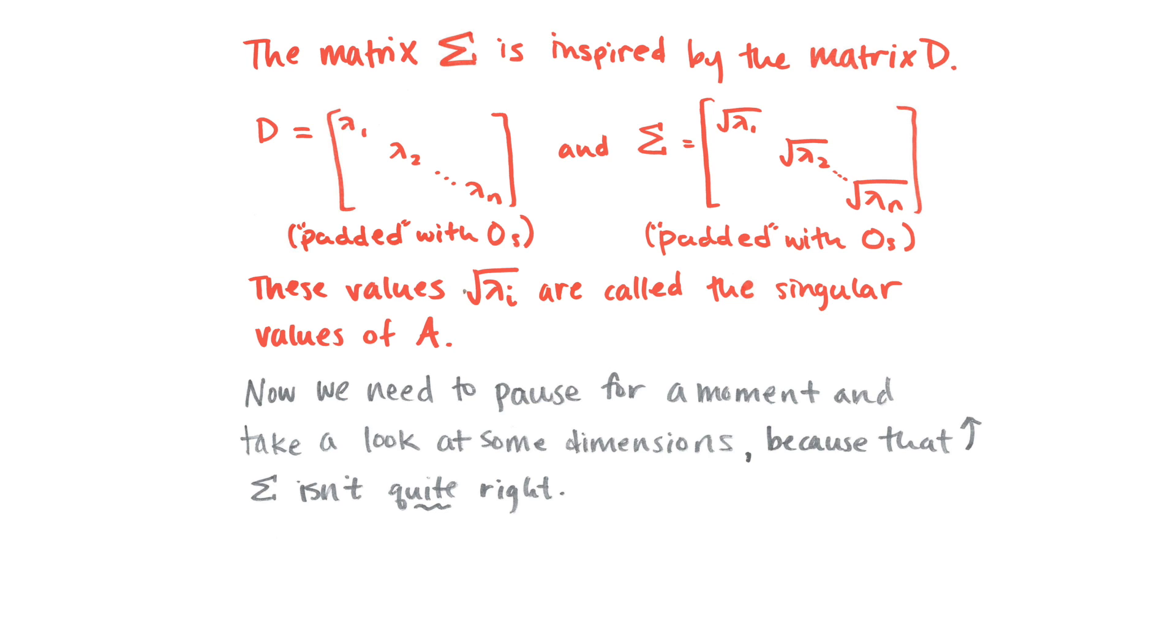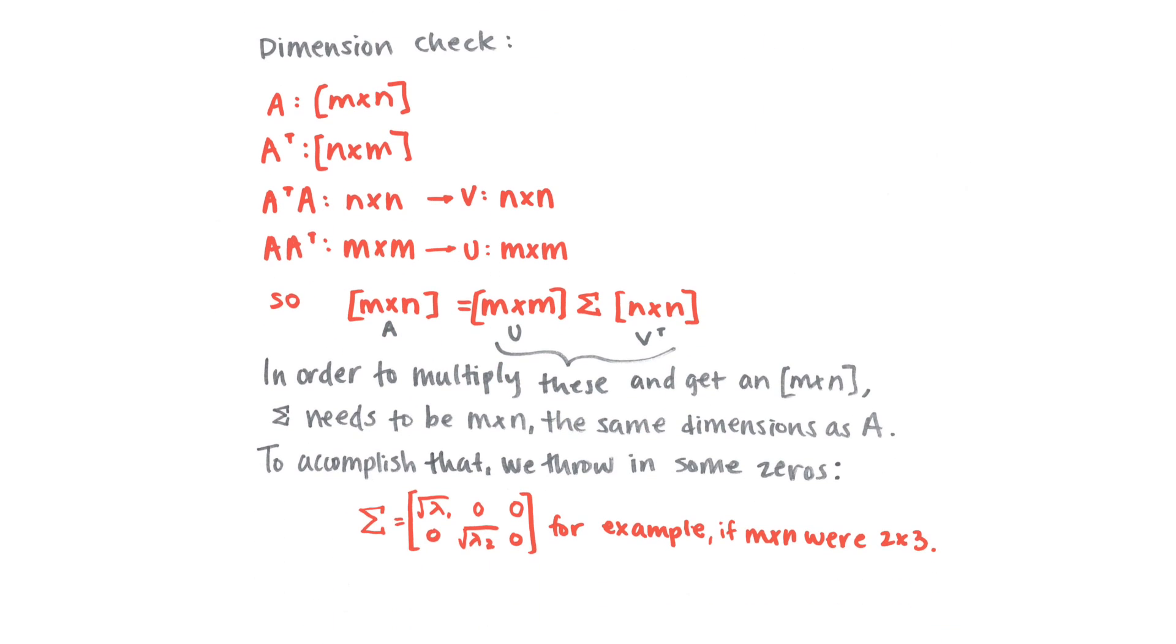But we have to take a second to look at some dimensions, because that sigma actually wasn't quite right. We want to multiply these three matrices together and get A, but we don't really know what dimension sigma needs to have to make that happen. So let's look at dimensions. We have A is m by n, and we have A transpose is n by m. And so when we multiplied out A transpose A, we got a matrix that was n by n, and therefore V was n by n. And when we multiplied A times A transpose, we got m by m, and U was m by m. And so if we take A, which is m by n, and we want to make it equal to u sigma v transpose, we have m by m times something times n by n. And if we want the dimensions to work out, we need sigma to be m by n, which is the same dimensions as A. And so to make that happen, we just throw in some zeros.